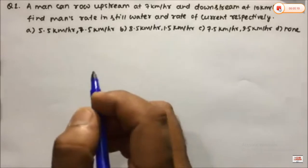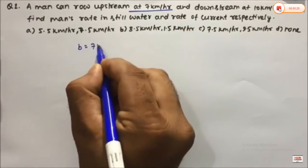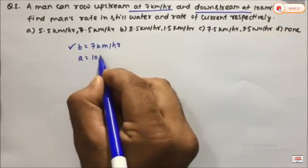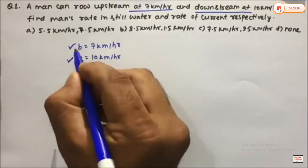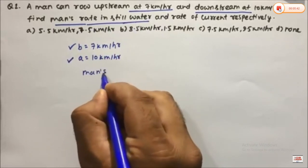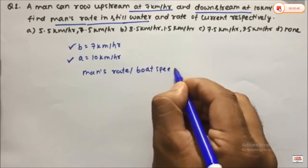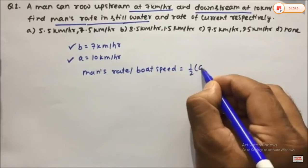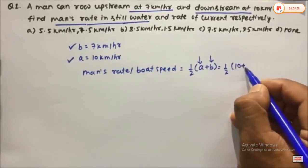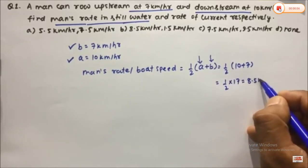Let's solve Question 1: A man can row upstream at 7 km/h and downstream at 10 km/h. Find the man's rate in still water and the rate of current. Upstream B equals 7 km/h, downstream A equals 10 km/h. Man's rate in still water equals speed of boat, which is one-half into (A plus B) = one-half into (10 plus 7) = one-half into 17 = 8.5 km/h.